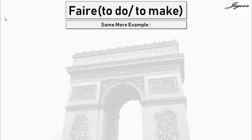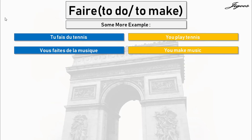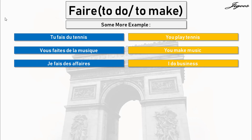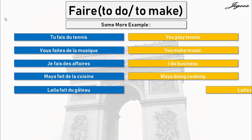Now look at some more examples related to the faire verb. Tu fais du football means you play tennis. Vous faites du football means you make music. Je fais du football means I do business. Maya fait de la cuisine — Maya is doing cooking. Laila fait du gâteau — Laila is making cake.